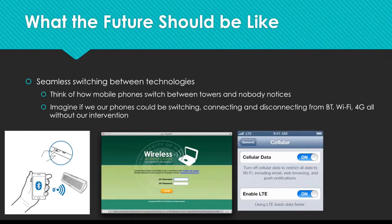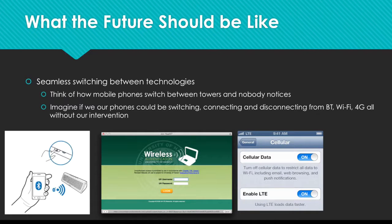So what should the future look like? Ideally we should have seamless switching between technologies. Think about how your phone automatically switches between cell phone towers as you're driving — you don't notice it, you don't have to tell it to connect to the next tower, it just does it in the background. Imagine if our phones could be switching and connecting and disconnecting from Bluetooth, Wi-Fi, 4G, and any other technology without user intervention. Right now you have to go into pairing setups for Bluetooth, go through captive portals for Wi-Fi, and enable or disable cellular data for roaming — it always requires user intervention.